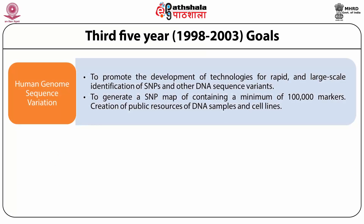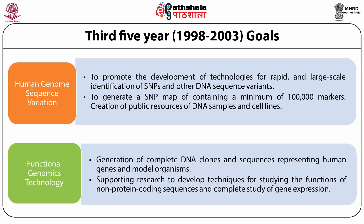The next goal was human genome sequence variation, involving promoting the development of technologies for rapid and large-scale identification of single nucleotide polymorphisms and other DNA sequence variations, generating an SNP map containing a minimum of 100,000 markers, and creation of public resources of DNA samples and cell lines. The next important goal was functional genomics technology, involving generation of complete cDNA clones and sequences representing human genes and model organisms, and supporting research to develop techniques for studying the functions of non-protein coding sequences and complete gene expression studies.